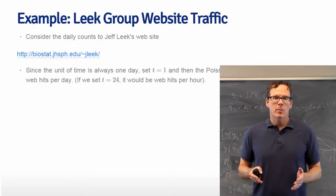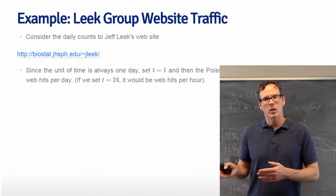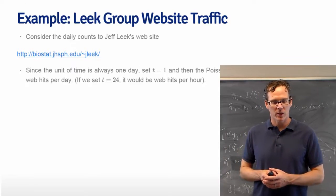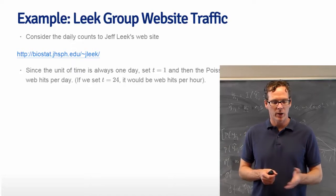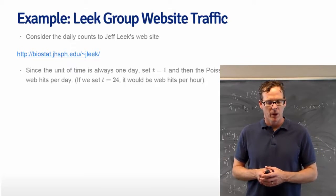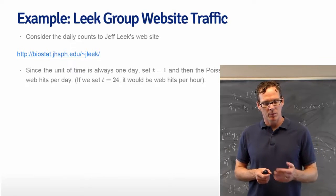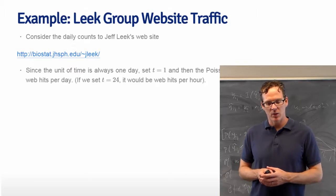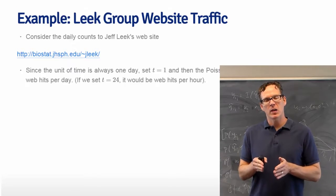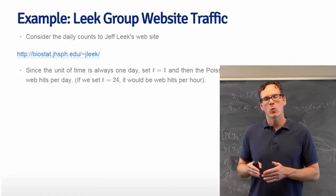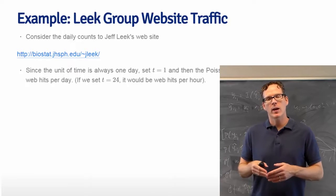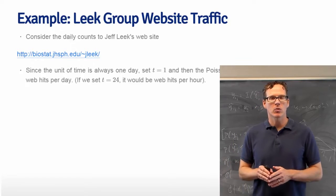As an example, let's look at Jeff Leak's web traffic. This is his website, biostat.jhsph.edu/~jleek. The Poisson mean, in this case, is interpreted as the number of web hits per day. So our time in this case is t equal to 1. Now, if we wanted to interpret the rate that we estimate as web hits per hour, we would have to put t equal to 24. And if you wanted to have it to be minutes, it would have to be t equal to 24 times 60, and so on.